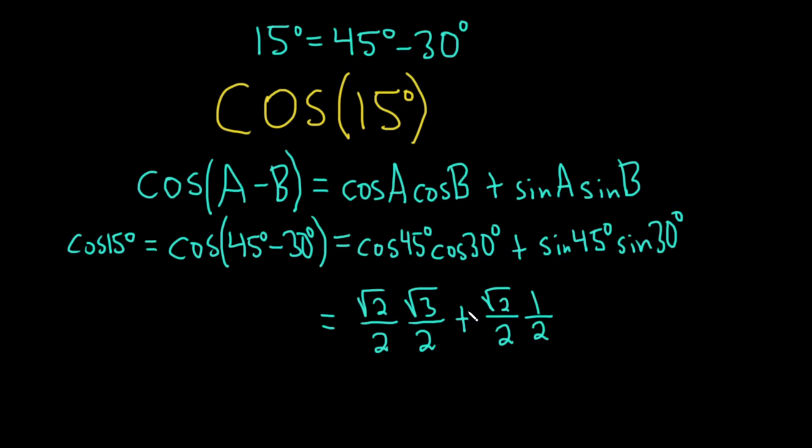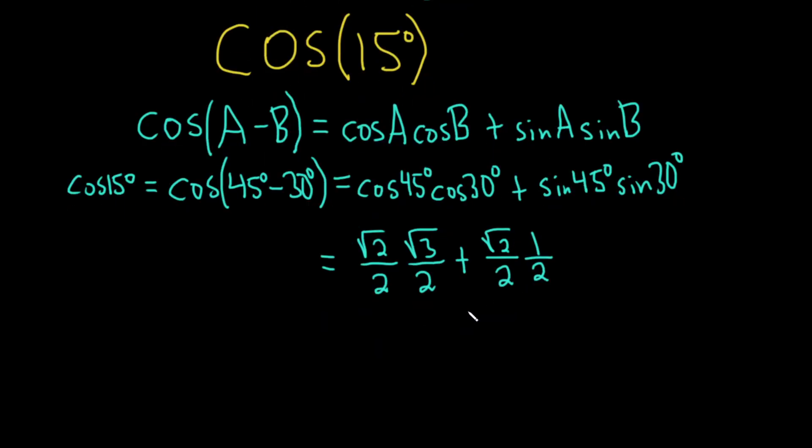Okay, we can keep going here. We can actually just multiply across. So this will be, here are the square roots. You can multiply what's inside them because everything's positive. So 2 times 3 is 6, and then 2 times 2 is 4. Plus the square root of 2 times 1 is the square root of 2, and then 2 times 2 is 4.